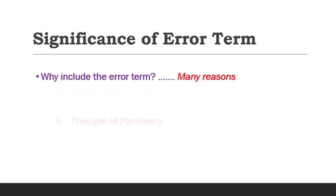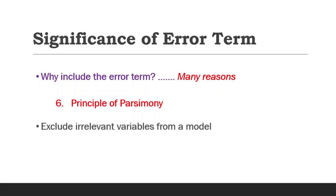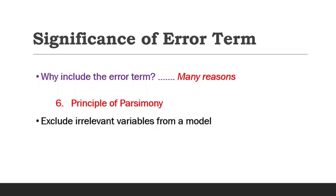The sixth point is the principle of parsimony. This principle requires that only relevant and important variables must be included in econometric modeling. For instance, in estimating the behavior of quantity demanded, we might include price, price of related goods, and income. Other factors such as taste and preference, age, population, and weather might not just be relevant to the model. Therefore, they are excluded and the u parameter introduced as their substitute.